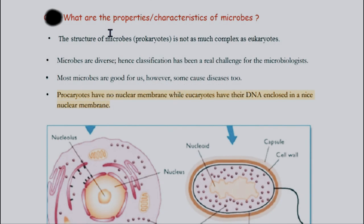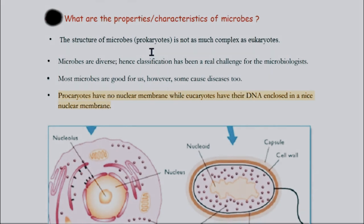Microbes are basically prokaryotic. They are not as complex in their structure as eukaryotic organisms. Eukaryotic cells are multicellular, which means they contain many cells, making their structure very complex. But the structure of microbes is not so complex.